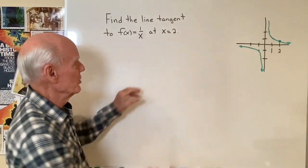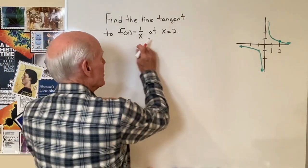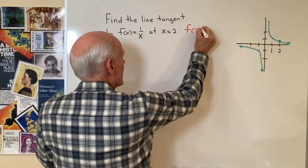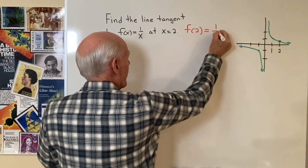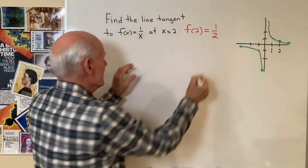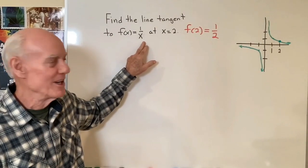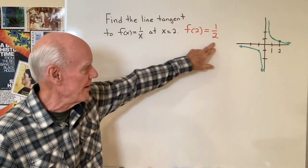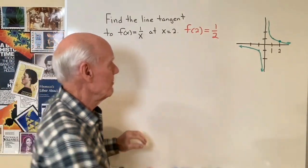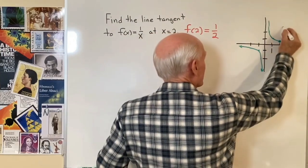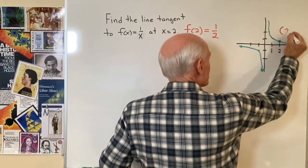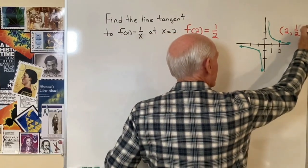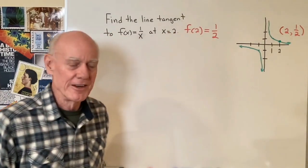So when x is equal to 2 for this function, f of 2 is going to be 1 over 2. f of x is 1 over x, so when x is equal to 2, f of 2 is 1 half. So that means that this point right here, x equal 2, y equal 1 half, is a point on that line.